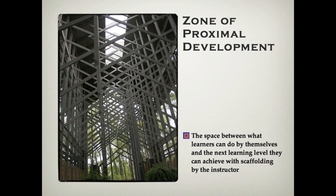In the middle of the forest stands a glass chapel filled with the intricate scaffolding that supported its internal construction until its completion. The zone of proximal development is the space between what learners can do by themselves and the next learning level they can achieve with scaffolding by the instructor. As the learner's abilities increase, the amount of scaffolding should decrease to the point that the learner is able to complete the task or master the concepts independently.